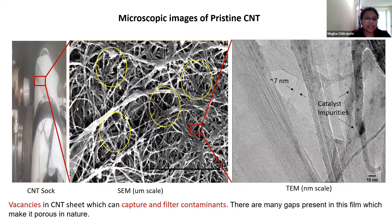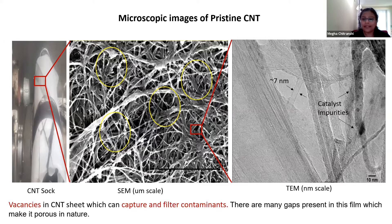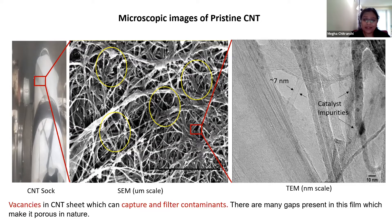In the first image, the sock is coming out of the outlet at the end of the reactor and collecting on the rotating dome. If we observe this sock at micrometer scale in SEM images, we can see that nanotubes are not tightly packed and not fully oriented. However, this structure presents many gaps and vacancies which can be used to capture and filter contaminants. At nanometer scale in a TEM image of the fabric, we can see that this CNT material mainly consists of multi-wall carbon nanotubes, with individual nanotube diameter of about seven nanometers. Catalyst impurities are also observed trapped inside the nanotubes.